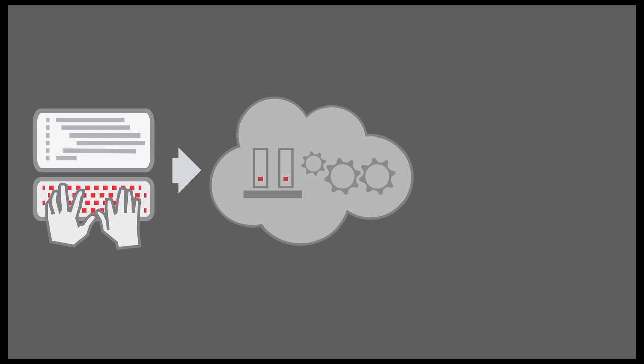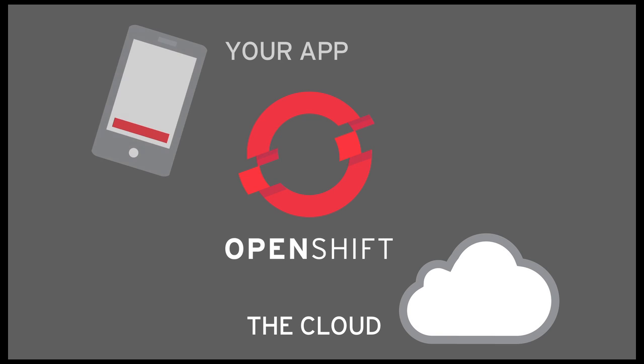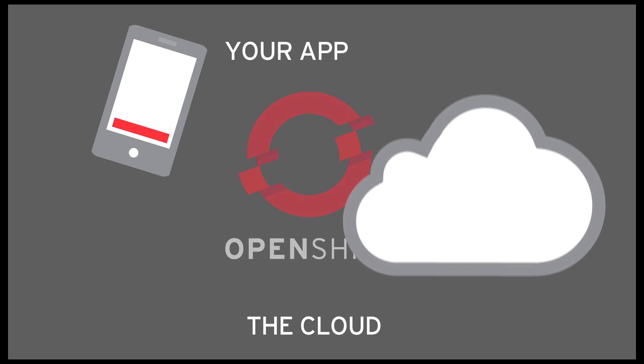Platform as a Service, or PaaS, is a cloud computing solution designed to help organizations — in particular developers — realize the benefits of cloud computing. It provides a fast, easy, and scalable way to run applications in the cloud. Amazon EC2, for example, is not a PaaS — it's Infrastructure as a Service, which is what most cloud providers offer today. Infrastructure as a Service uses virtualization and other software to create on-demand services out of compute, network, and storage resources.